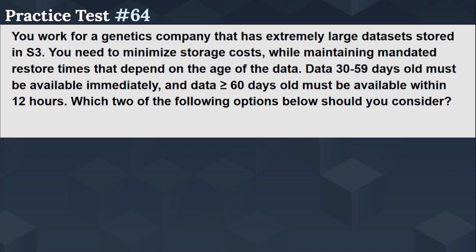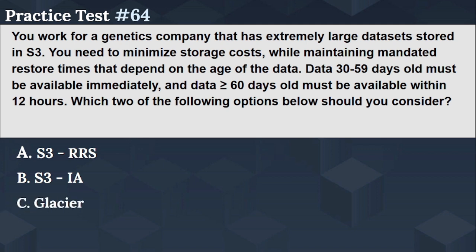The next question is: You work for a genetics company that has huge datasets stored in S3. You need to minimize storage costs while maintaining mandated restore times that depend on the age of the data. Data 30 to 59 days old must be available immediately, and data greater than or equal to 60 days old must be available within 12 hours. Which two of the following options should you consider? Option A: S3 RRS. Option B: S3 IA. Option C: Glacier. Option D: CloudFront.